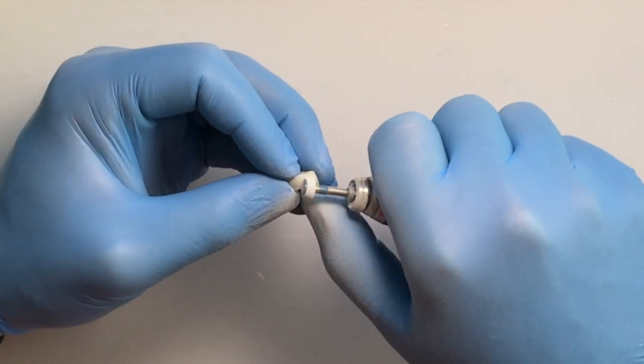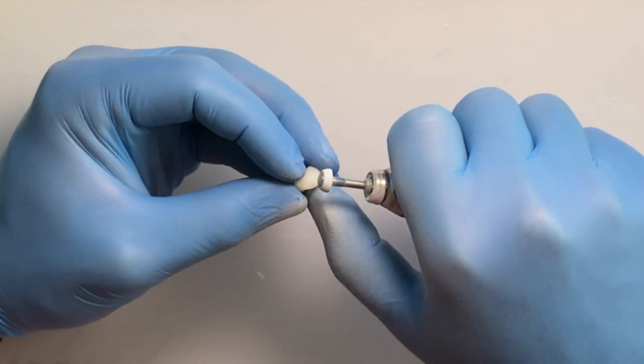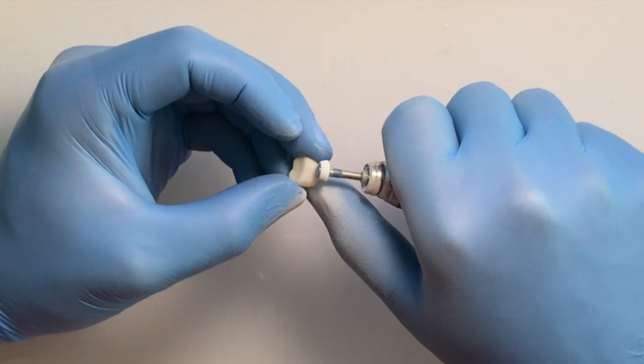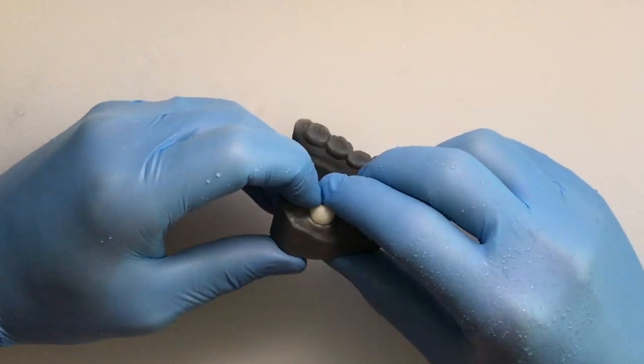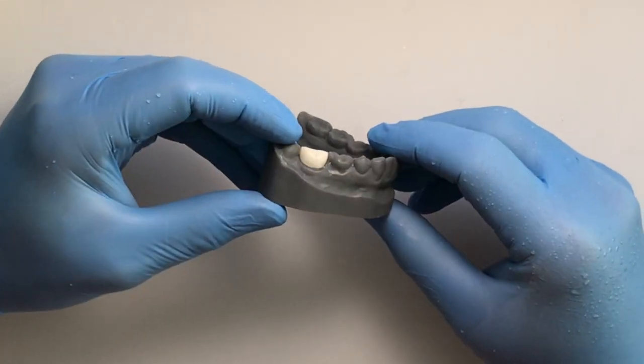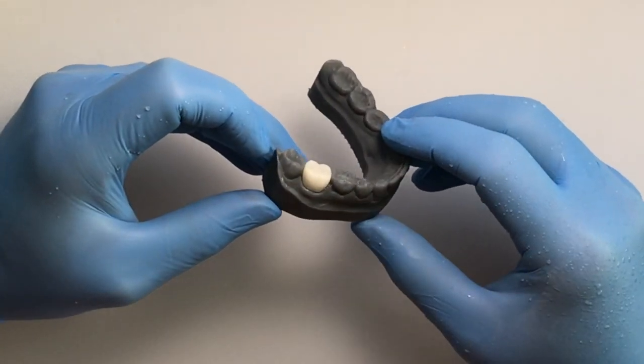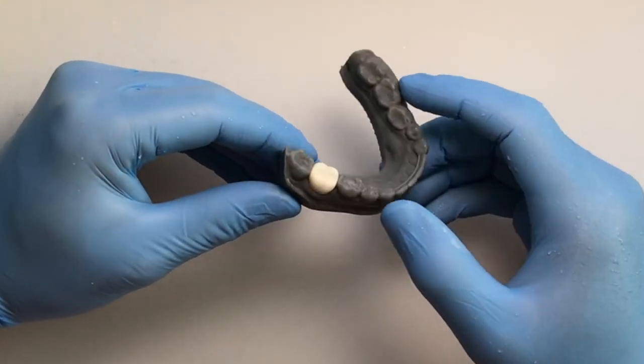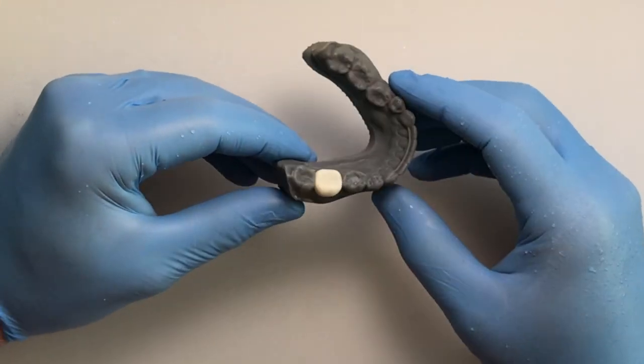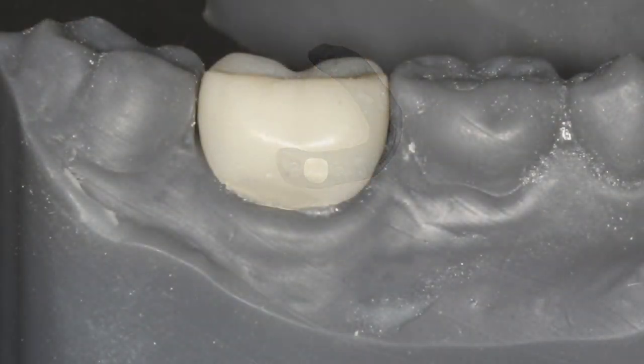Once we get this all completed, we then usually polish it with a rag wheel and pumice and water. Once it's completed, try it on the model or the tooth and make sure that the margins are sealed. As you can see, this makes a beautiful, nice shine and polished provisional. It fits well and adapts well to the model.